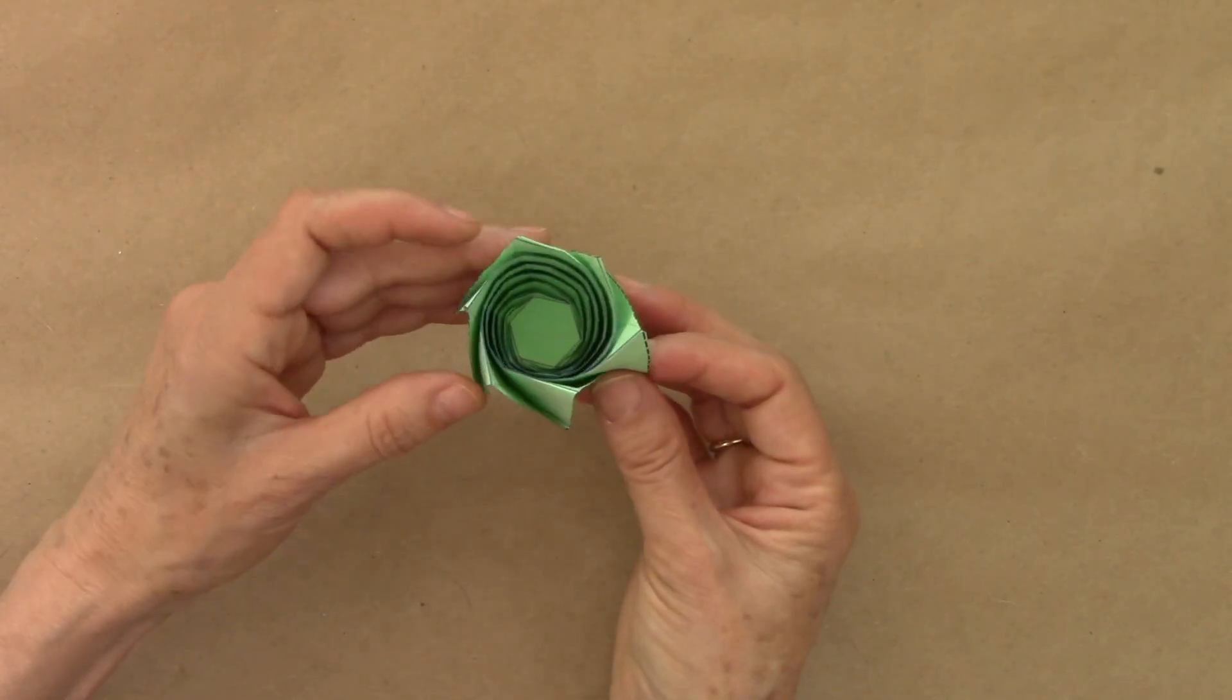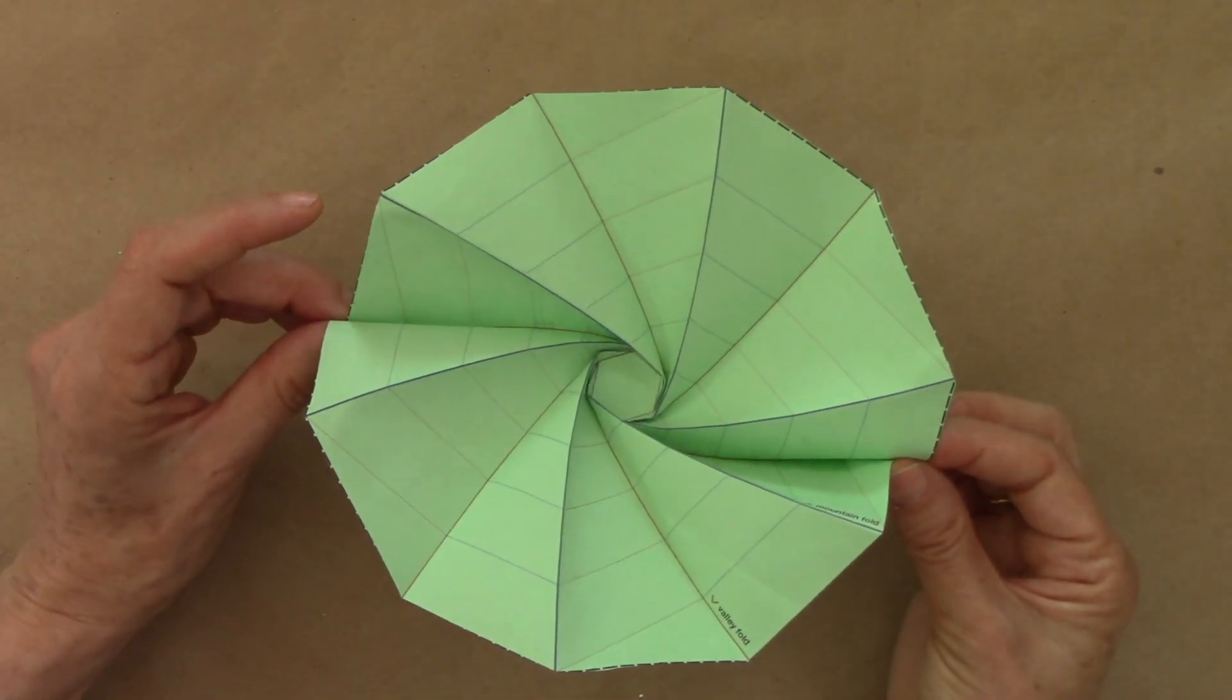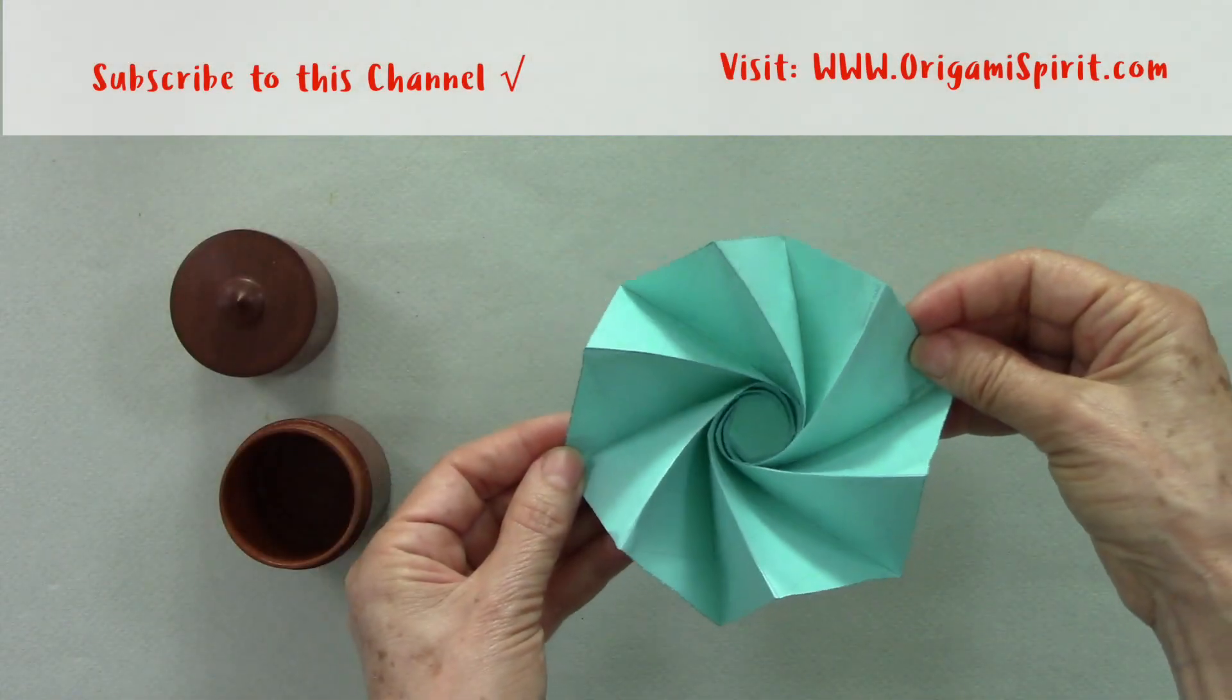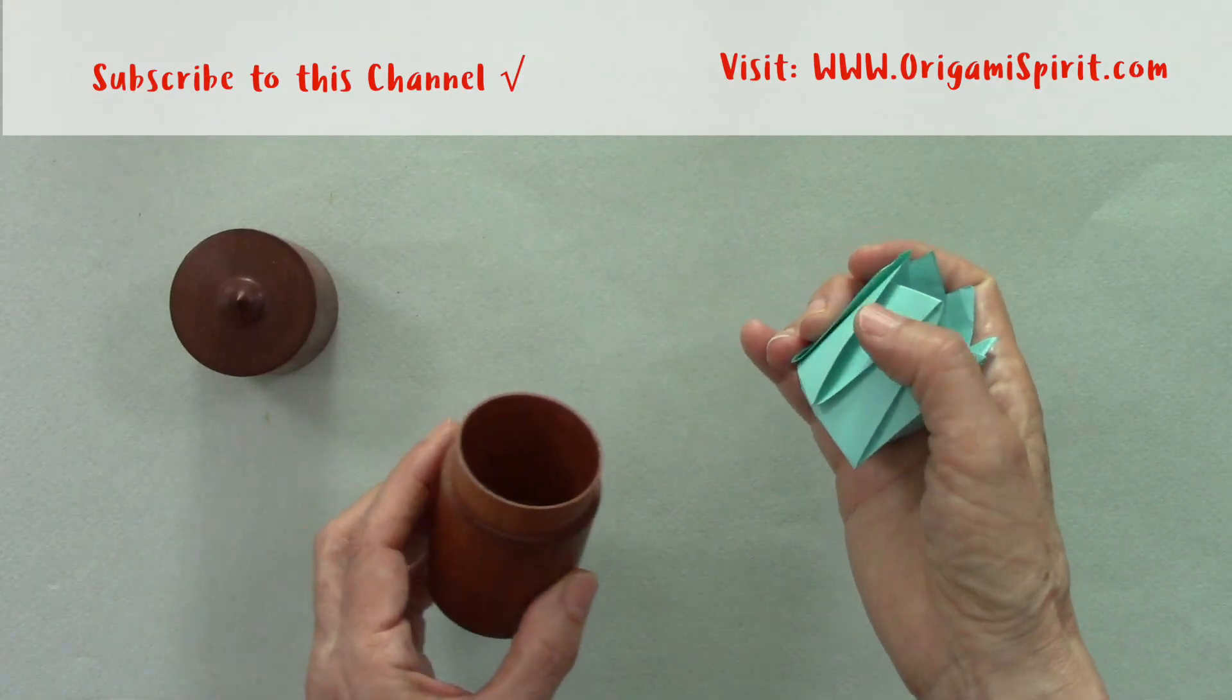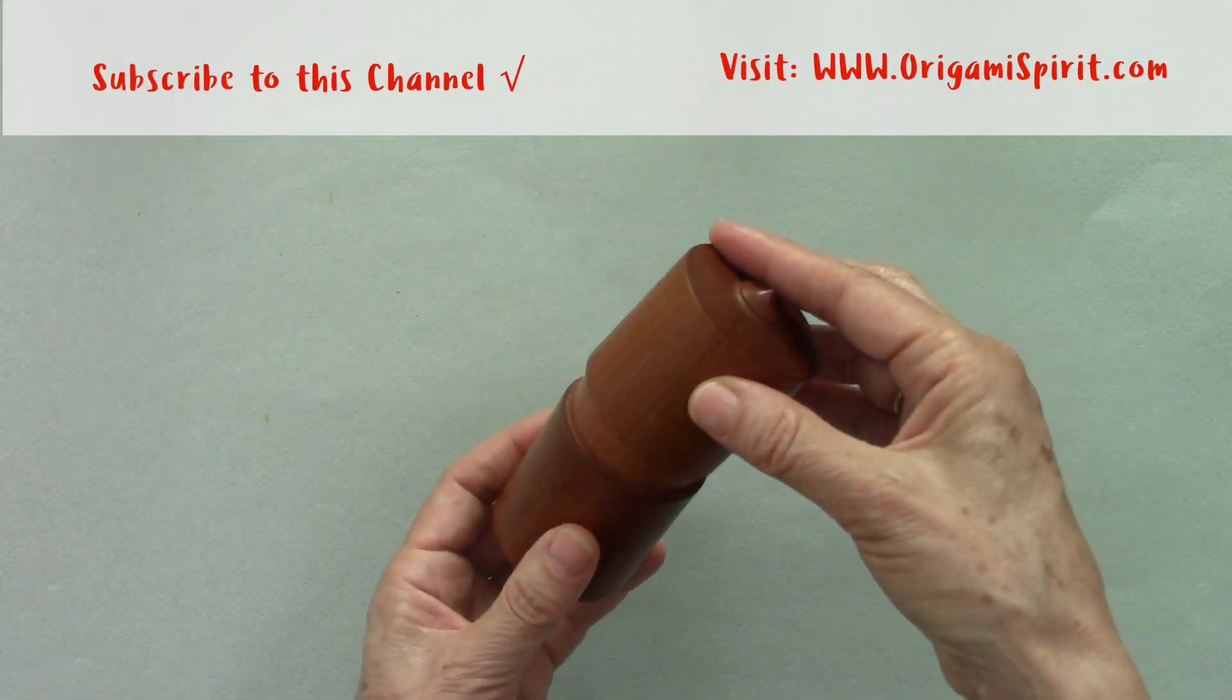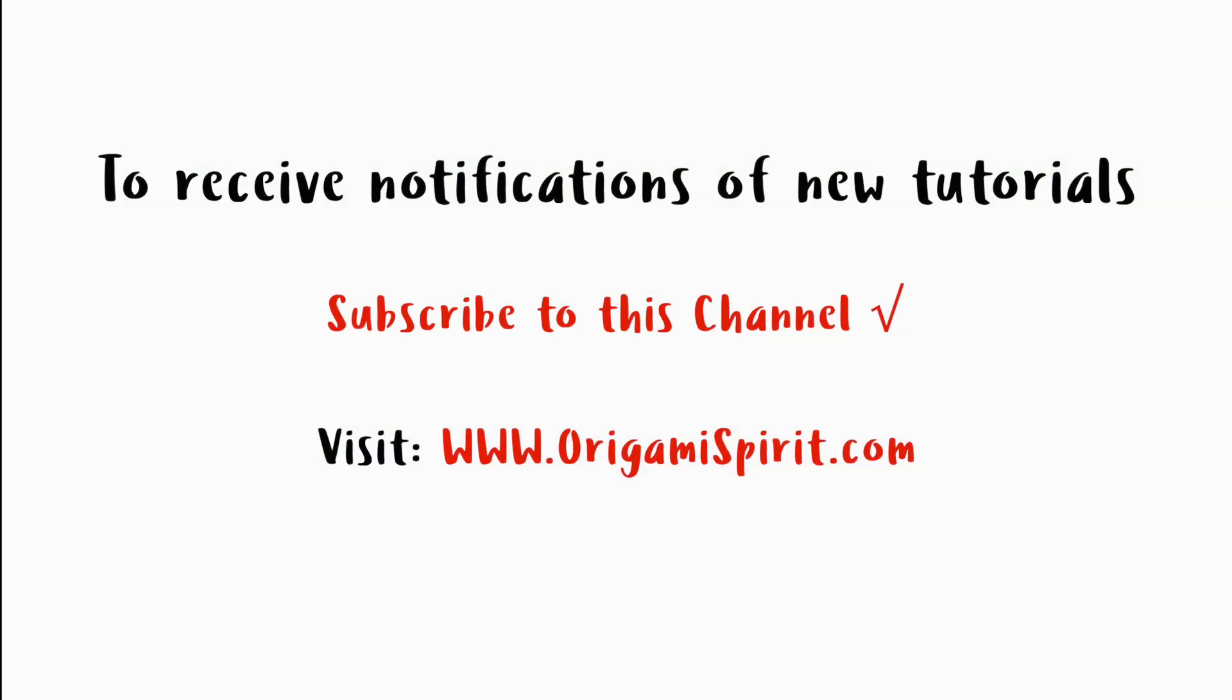With our thumb we can press inside to reinforce the folds. To open and close it, we hold it from opposite flaps, up and forward and close it.